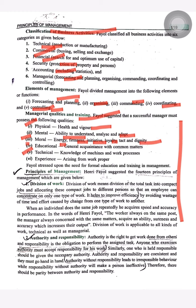Educational qualities — acquaintance with common matters. Technical knowledge of machines and work processes. Experience arising from work itself. So those should be the managerial qualities and training according to Henry Fayol for a successful manager.